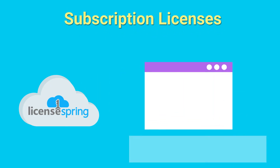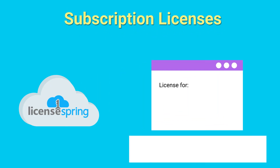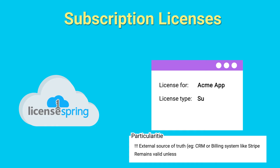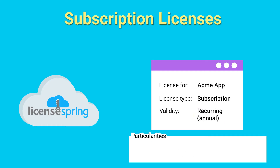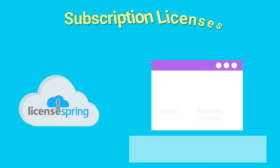Subscription licenses synchronize the license validity with the state of the subscription. The source of truth is the subscription service provider, such as a CRM or a recurring billing system like Stripe.